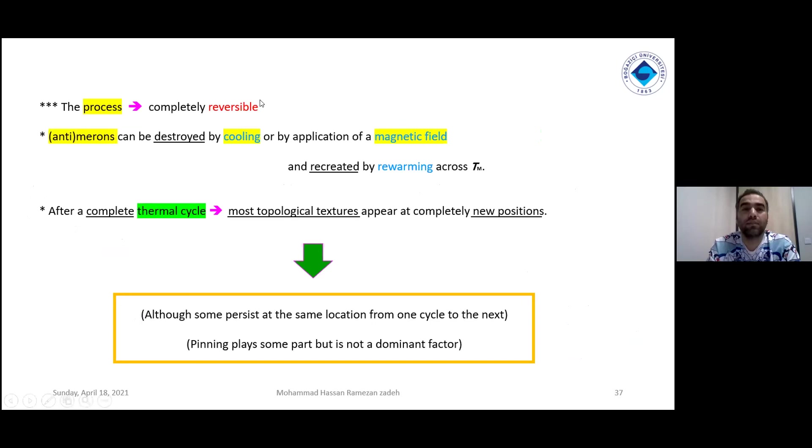Reversibility is another concept in this paper. Merons and anti-merons can be destroyed by cooling and using magnetic field. Regeneration will happen by rewarming around the Morin temperature, which they call thermal cycle, which is cooling and heating process. Most topological textures appear at a completely new position. It means that regeneration and recreation is happening, but not in the same positions.